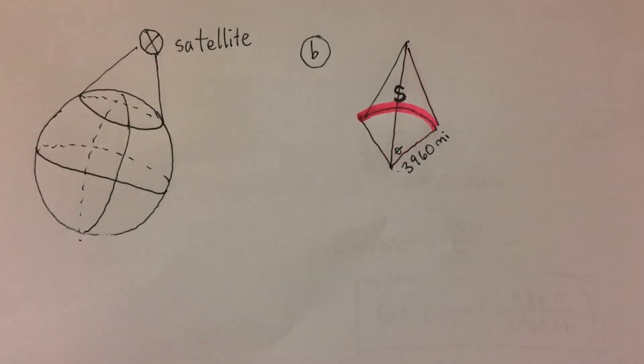In part B, we need to write a function for the arc length shown in the diagram in terms of theta, an angle shown in the diagram. Arc length can be calculated by multiplying the radius of the circle by the arc measure, which, if you look closely, is actually 2 theta.